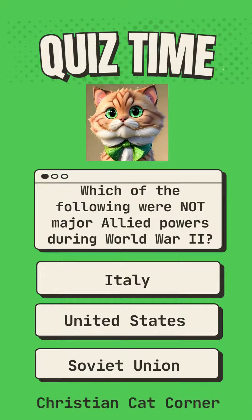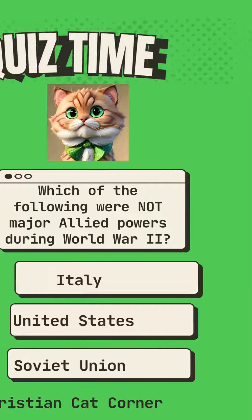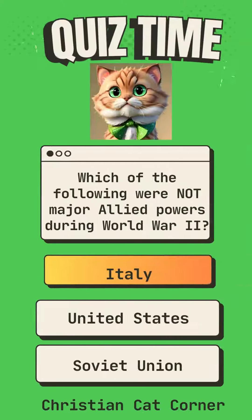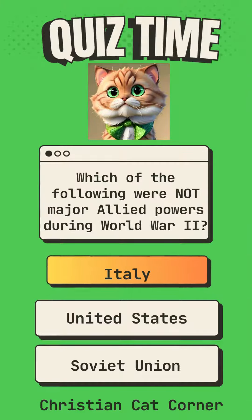Which of the following were not major Allied powers during World War II? Options: Italy, United States, Soviet Union. Answer: Italy.